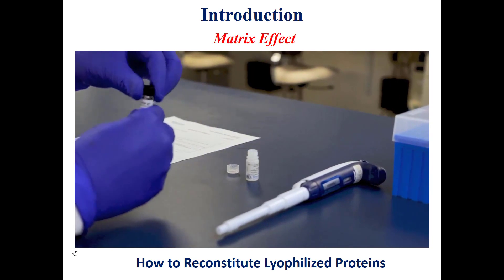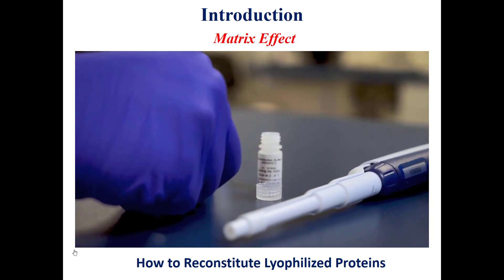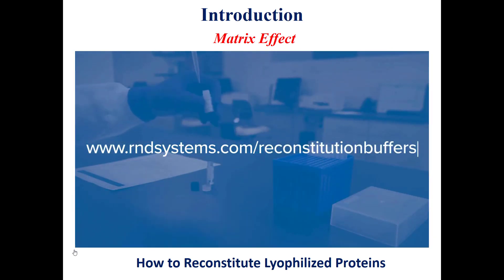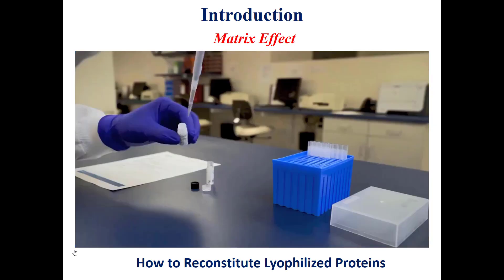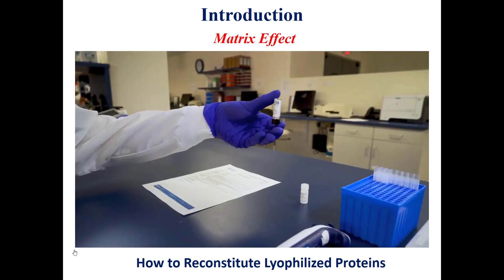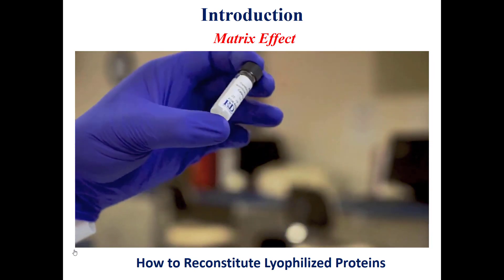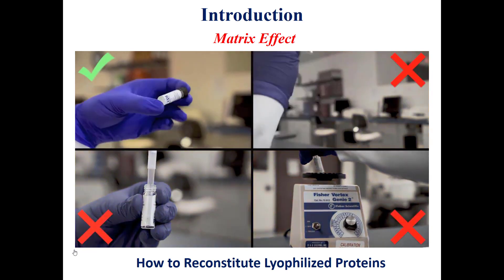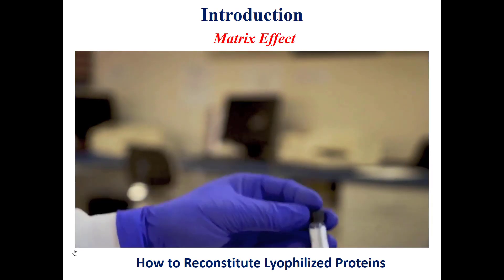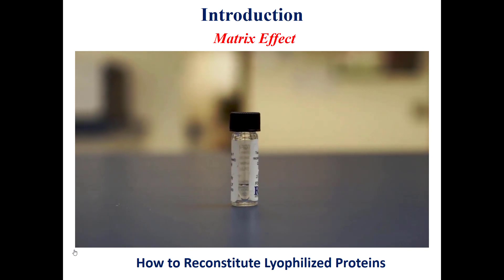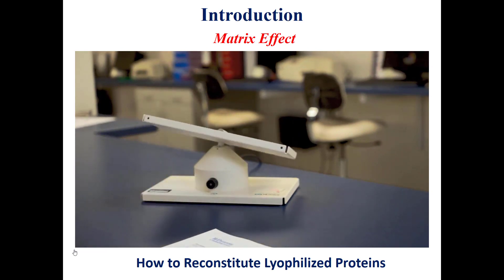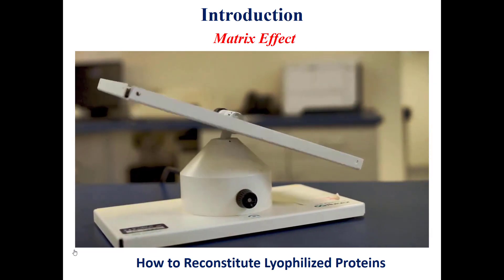Now you are ready to add the buffer. If you do not have the necessary buffer on hand, RND Systems offers a ready-to-use buffer specific to your protein or antibody at www.rndsystems.com/reconstitution-buffers. Using the volume calculated with the reconstitution calculator, slowly add the buffer to the vial to achieve the desired concentration. Gently agitate the vial to ensure thorough reconstitution. When mixing, avoid shaking, pipetting, and vortexing, as this can result in protein loss or denaturation. The powder should be entirely dissolved within 15 to 30 minutes.